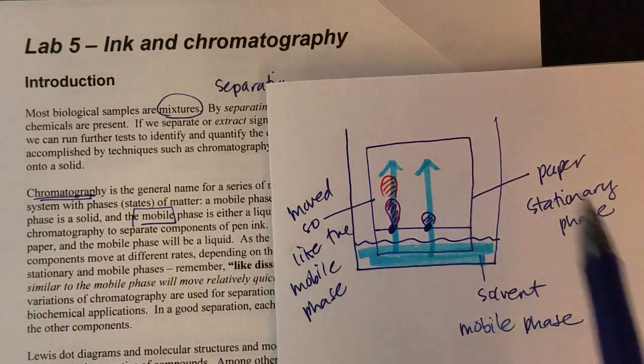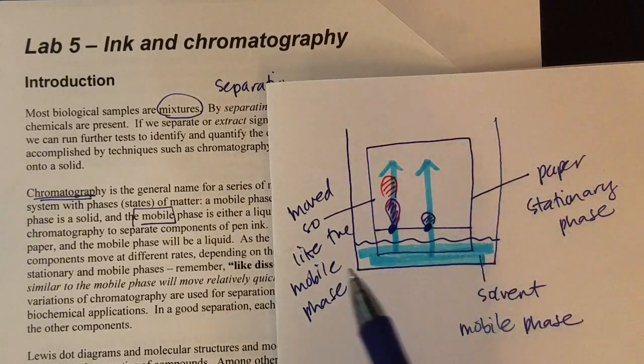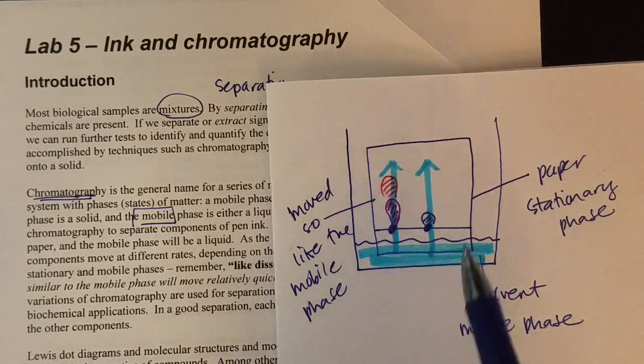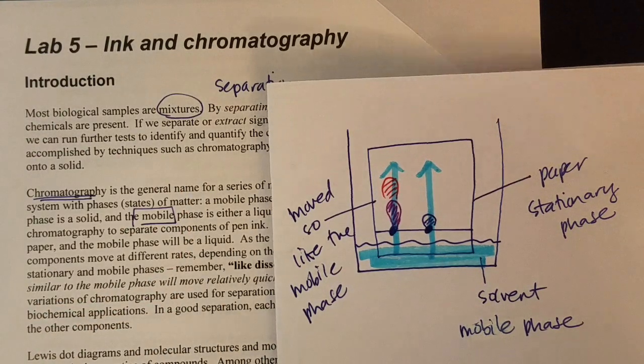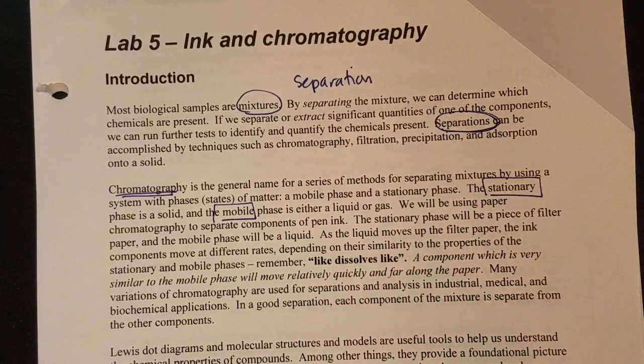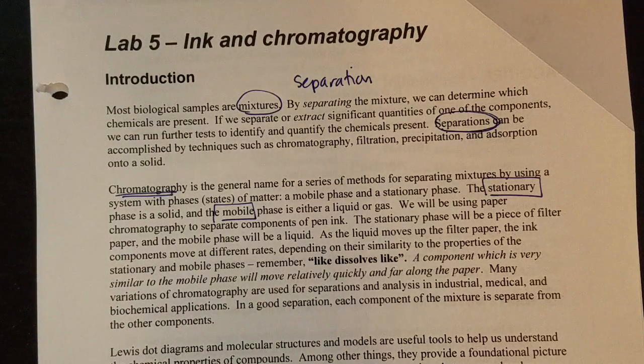So we will be able to differentiate between two inks and also make some inferences about that red must be very similar to the solvent's properties because it moved so much with the solvent. So if we go back to the lab, we're going to be looking for that partitioning or separating between the stationary and the mobile phase as we work through today.